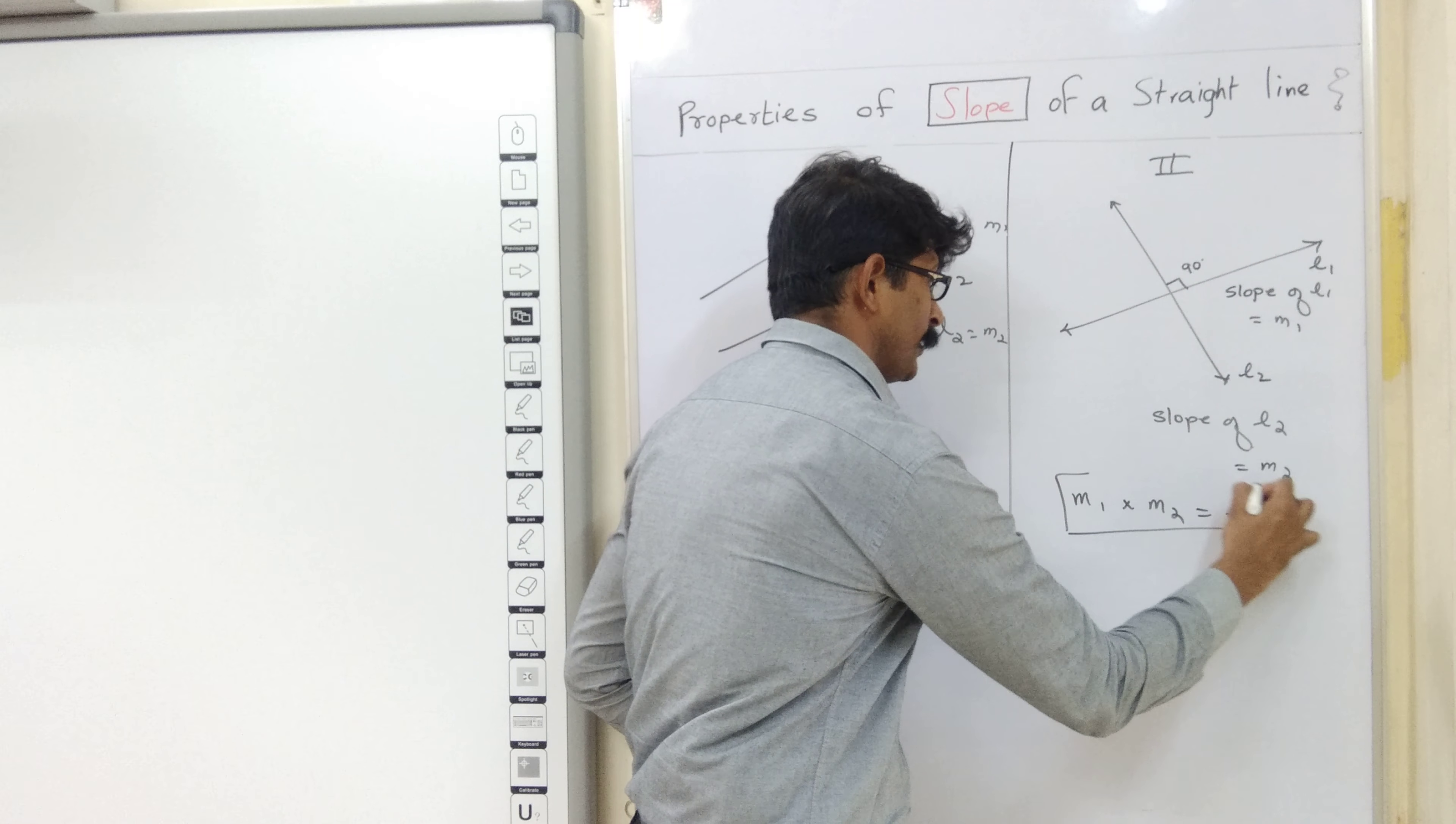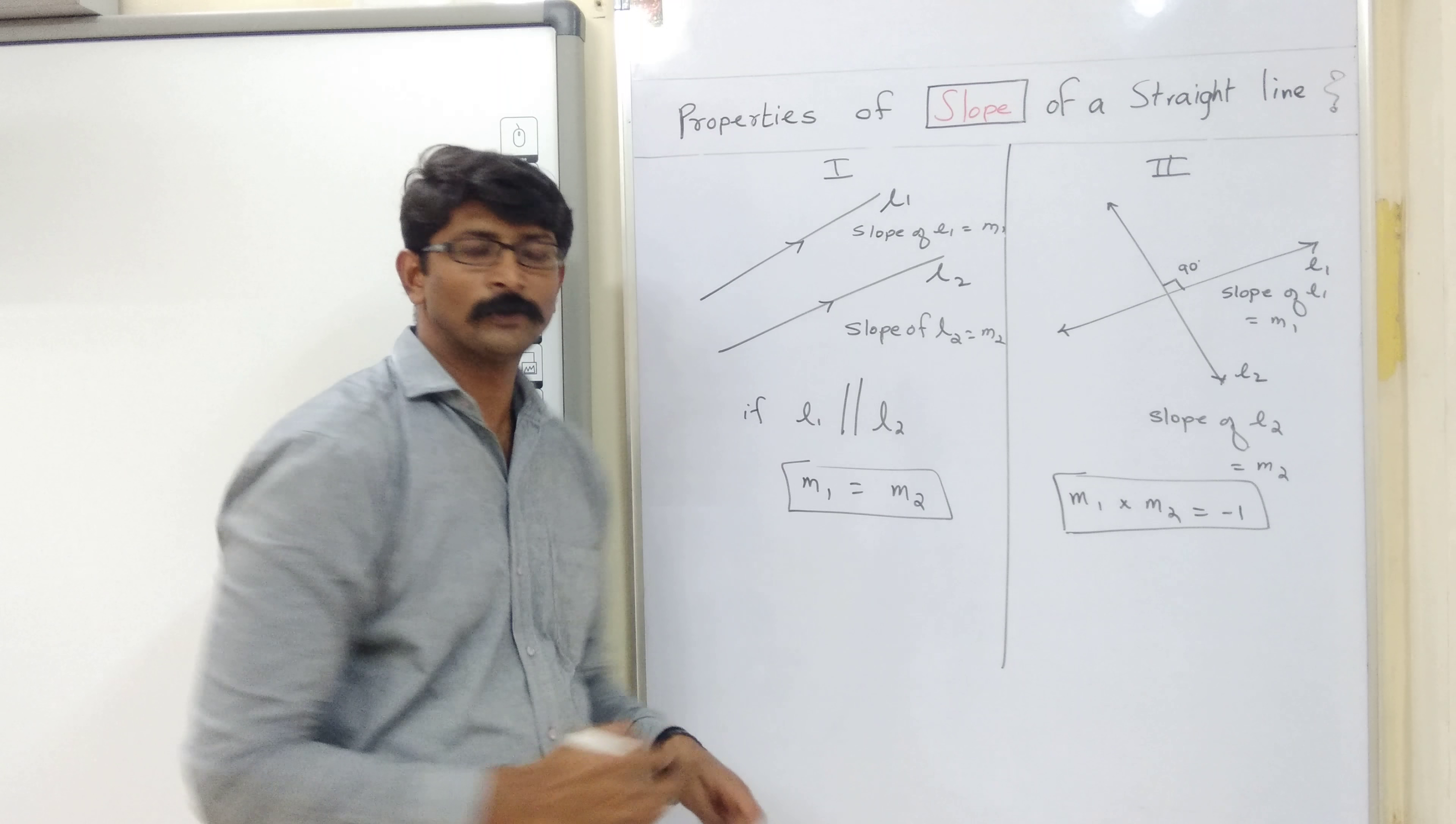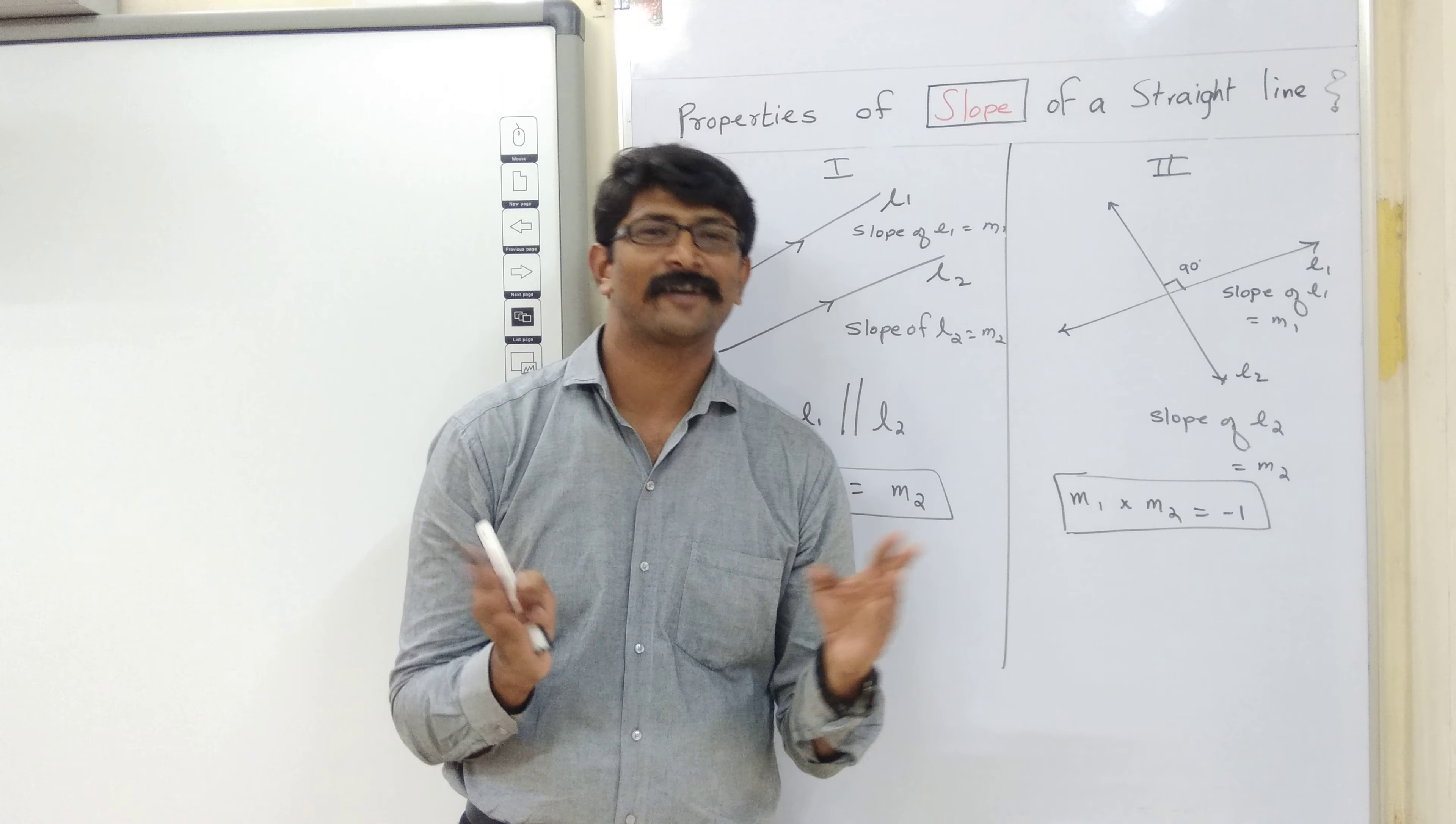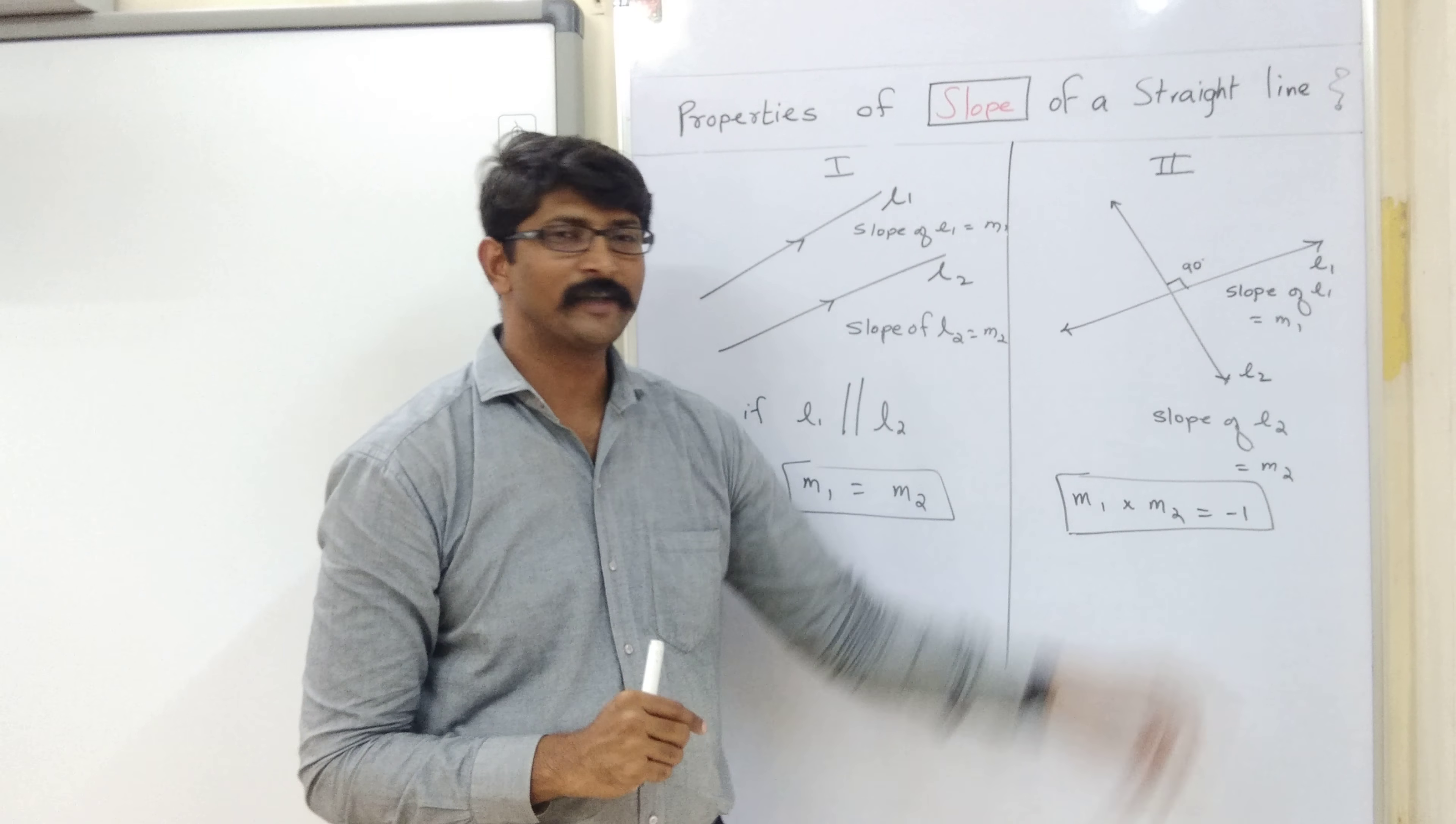I hope students, you have understood this. When the slope product is minus 1 and when the slopes are equal. So, if two lines are parallel, slopes are equal. Very good. And if two lines are perpendicular, then their slope product is equal to minus 1.